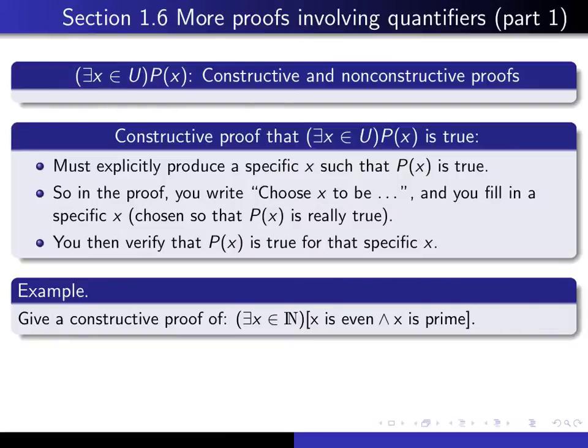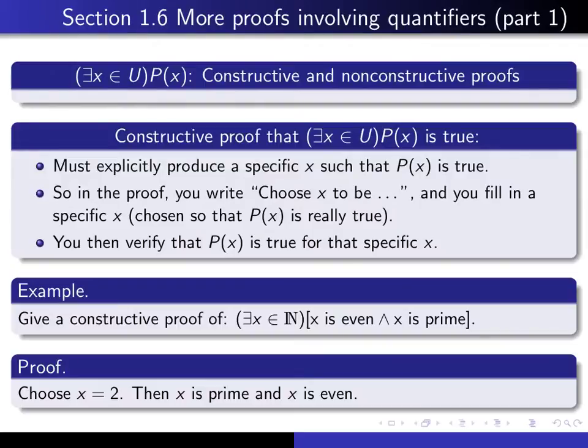Here's an example of that. Give a constructive proof of the following: There exists a natural number x such that x is even and x is prime. In order to make the proof constructive, you have to actually produce a specific x for which that's true. If you think about it for a moment, you'll realize that x equals 2 works. So you just simply write, choose x equal to 2, and then verify that this is true for that x. Then x is prime and x is even. That's the end of the proof.